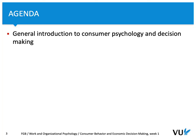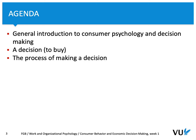The agenda for this part is to focus on general aspects related to consumer psychology and decision making. Then we're going to consider what actually is a decision, specifically related to buying stuff, and finally we're going to focus on the process of decision making.